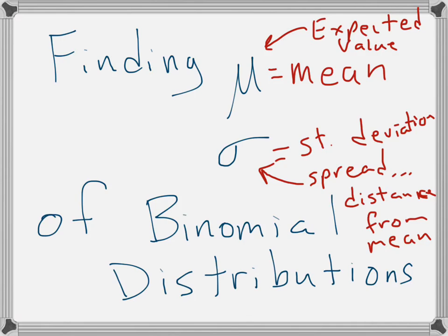And Matchbox 20, rediscovered them, it's pretty awesome. So our goal today is to figure out the mean and standard deviation of binomial distributions. This little Greek letter, called mu, is the measure of the mean, also called the expected value. And when we're talking about the spread of these distributions, we use sigma, which is the standard deviation, or the spread, measuring the distance from the mean. Let's find the mean and standard deviation of a binomial.